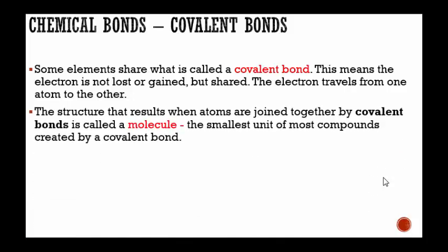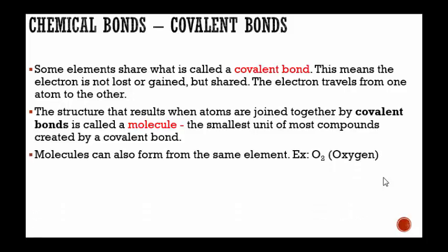The structure that results when atoms are joined together by covalent bonds is what is called a molecule, which is the smallest unit of most compounds created by a covalent bond. Molecules can also form from the same element. For example, oxygen O2, the ozone layer O3, all coming from the same element.